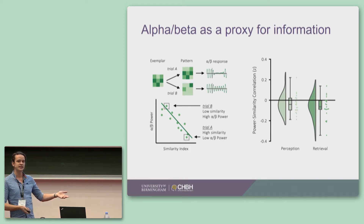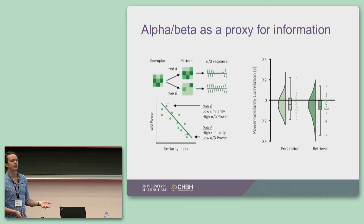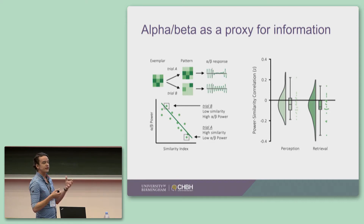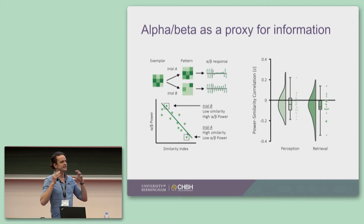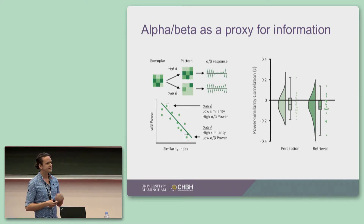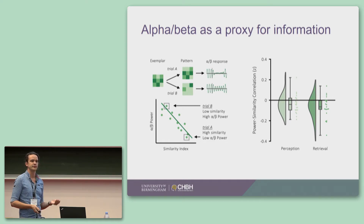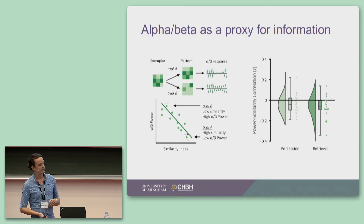And then we can conceptually replicate this idea during retrieval. So when you retrieve that video — when you're mentally replaying it with no visual perception — you still see the same phenomenon: an increase in retrieved information correlating with a decrease in the alpha-beta oscillations.